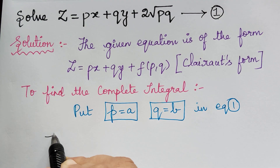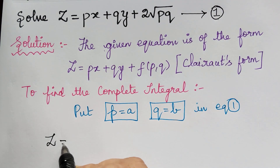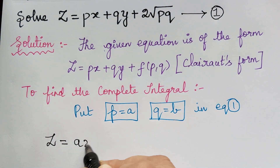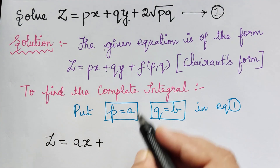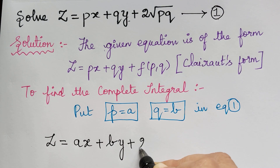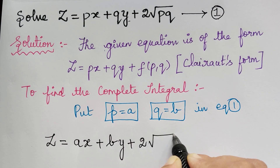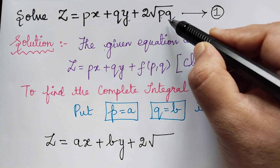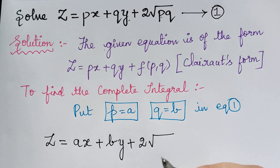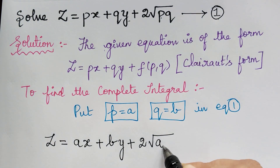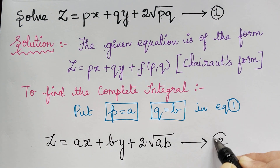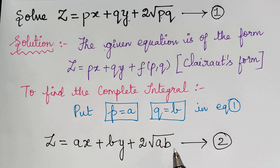Substituting p = a and q = b, we get z = ax + by + 2√(ab). This is equation 2, and it gives the complete integral.